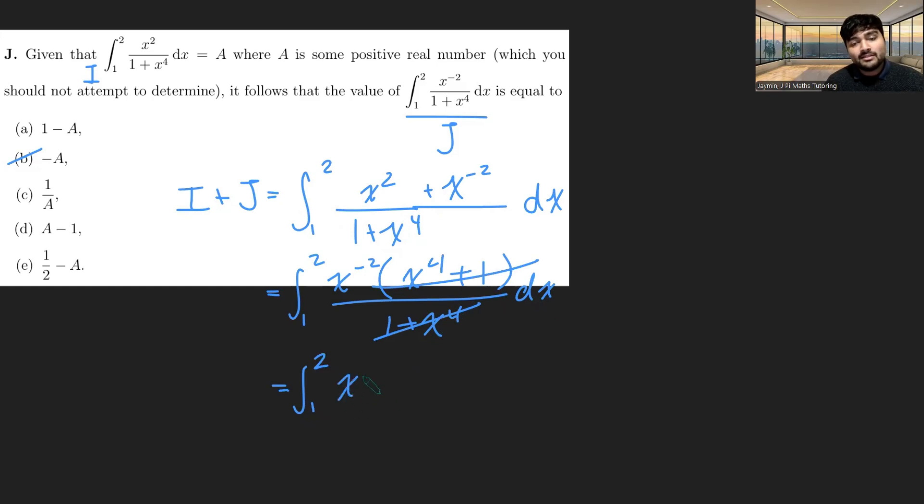This is just the integral from 1 to 2 of x to the minus 2 dx, which we can evaluate. So that's going to be minus 1 over x from 1 to 2. Plugging in 2, you get minus 1 over 2, and then 1, and so this is just going to equal 1 half.